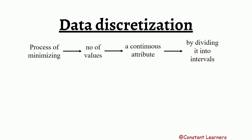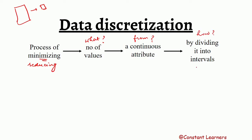Data discretization is a process of reducing the number of values from a continuous attribute by dividing it into intervals. So the process of minimizing the number of values from a continuous attribute by dividing it into intervals is data discretization.